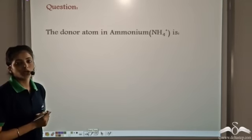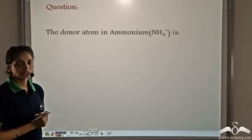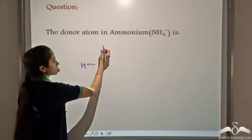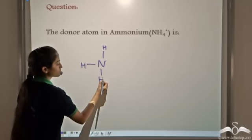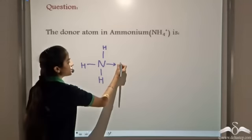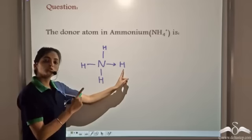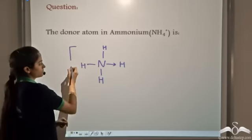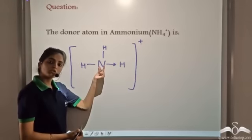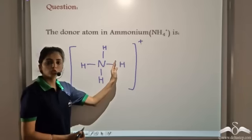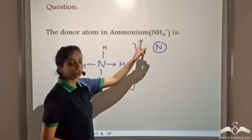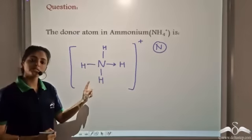The donor atom in ammonium ion — so we know the structure of ammonium ion. Nitrogen has a lone pair of electrons which it completely shares with the hydrogen ion, which was short of a lone pair of electrons. Since nitrogen is completely sharing its lone pair of electrons with hydrogen, nitrogen atom is the donor. So in ammonium ion, the donor is nitrogen atom.